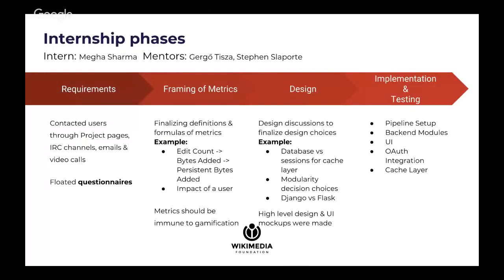Now coming to how this three-month journey has been and why it was particularly challenging. First, there were no requirements at all — we had to contact users, get everything framed from them, and then convert that into a technical set of requirements, which was a new and complicated task for me. After that, we moved to framing metrics that could cover different areas signifying how well a user is performing. We also needed to ensure the metrics could not be gamed — for example, if someone corrects a typo 100 times and deletes it again and again, that should count as only one edit, not 2,000.